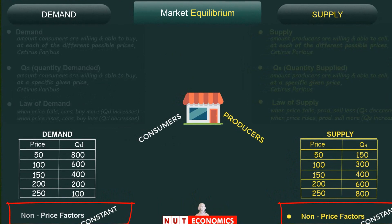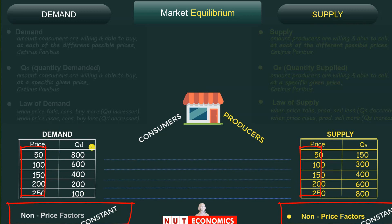In the market for any product — in this case, ice creams — consumers bring in the demand and producers bring in the supply. Both demand and supply assume all non-price factors are constant. Free market economic theory predicts that the price of 150 is the price that will exist in the market, because this is the only price at which the quantity demanded of 400 is exactly equal to the quantity supplied of 400.